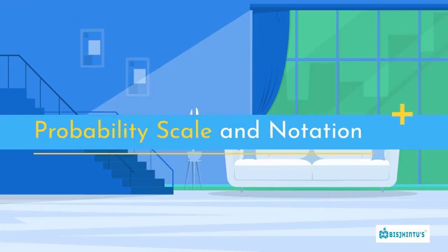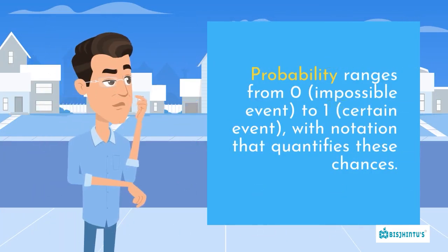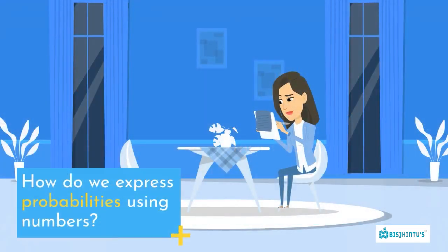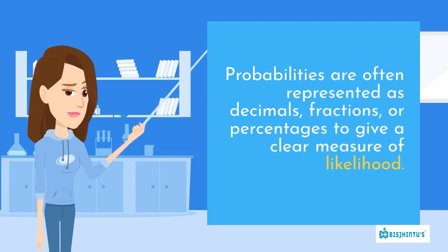Probability Scale and Notation. Probability ranges from zero, an impossible event, to one, a certain event, with notation that quantifies these chances. How do we express probabilities using numbers? Probabilities are often represented as decimals, fractions, or percentages to give a clear measure of likelihood.